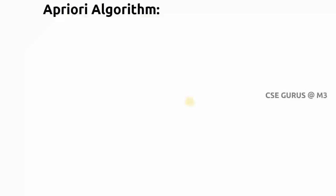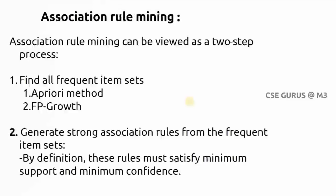Welcome to the class of data warehousing and data mining. In this lecture we will see what is the Apriori algorithm. Before going into the Apriori algorithm, first we will see why it is required and where this algorithm is useful. This algorithm is useful in the process of association rule mining, which can be viewed as a two-step process.